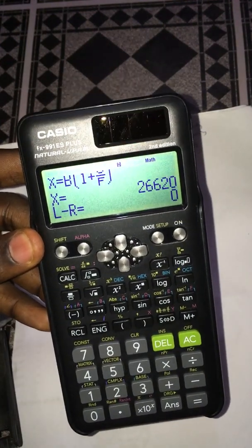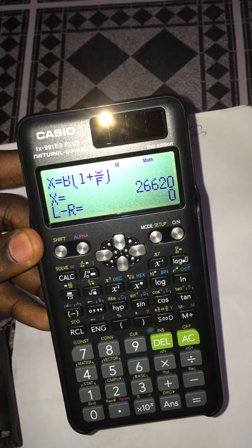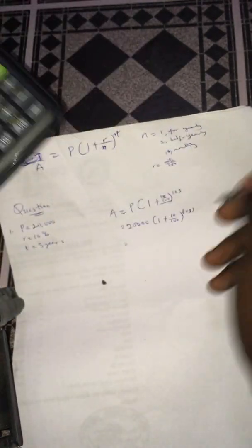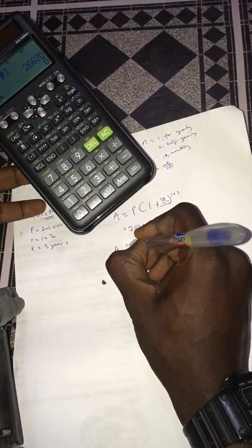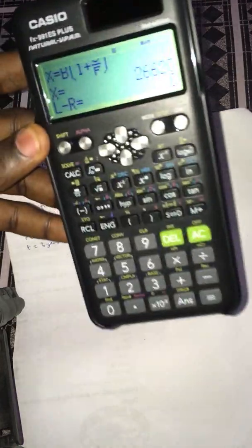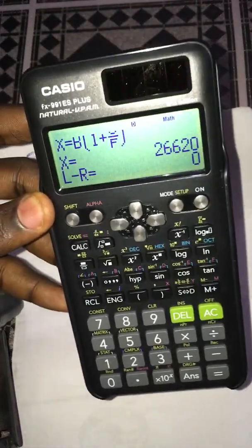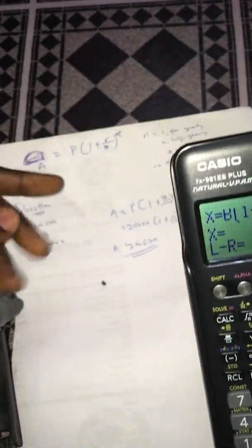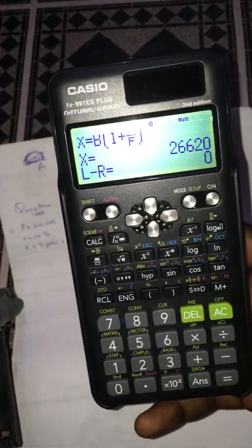The answer to the question is 26,620. So A equals 26,620. If you solve this manually, you get this answer. With the calculator, you get it that fast.